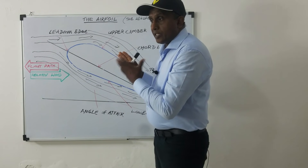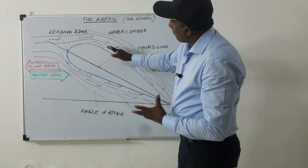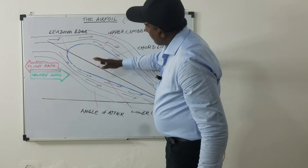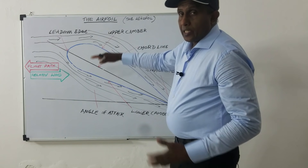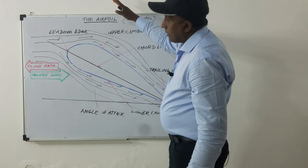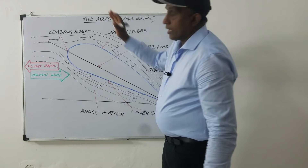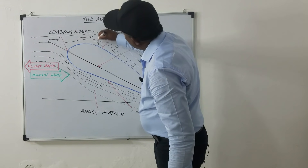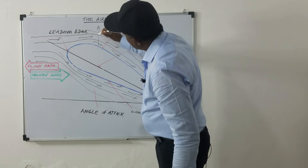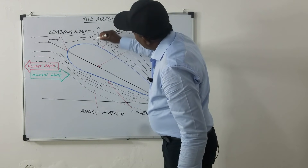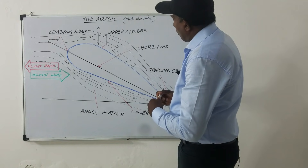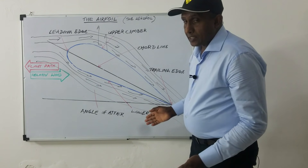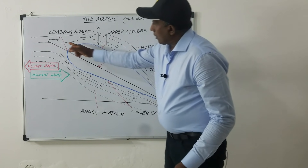According to Bernoulli's principle, if the velocity increases, the pressure will decrease. Therefore, the airplane's wing generates a lifting force when airflow moves around the wing like this, generating a lift force.